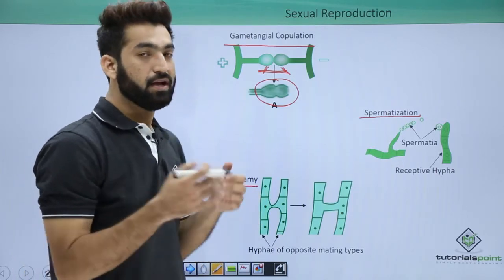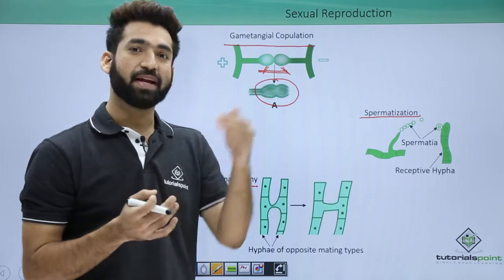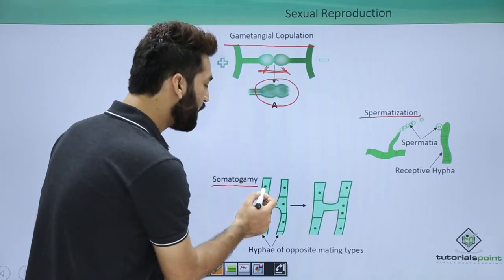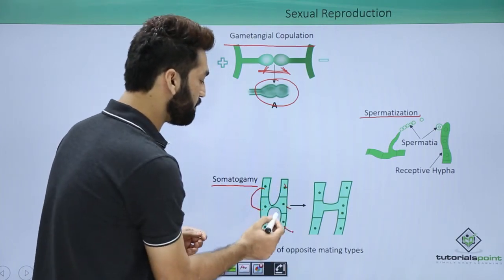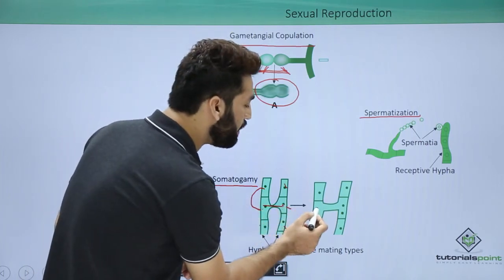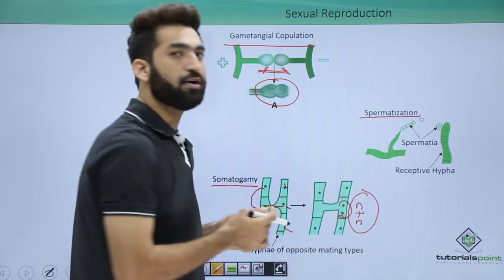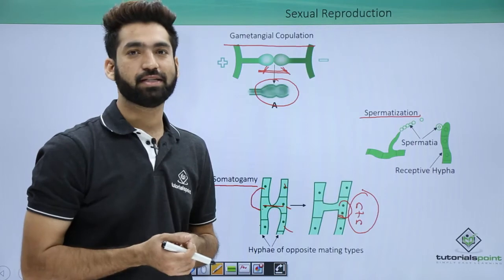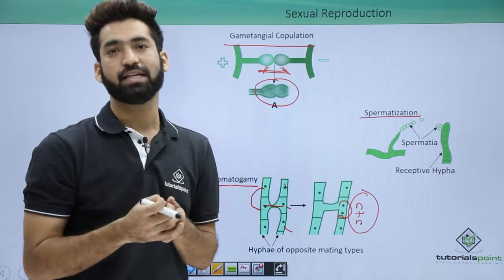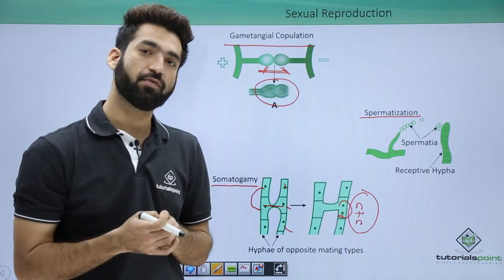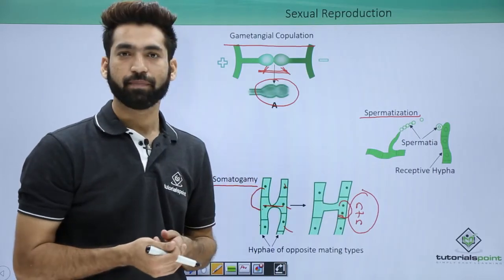The fifth method, very common in basidiomycetes, is somatogamy. Members of basidiomycetes don't have sex organs, yet sexual reproduction takes place because their somatic cells combine. A nucleus transfers from one somatic cell to another, making the cell n+n, which is called the dikaryon stage. The dikaryon stage is an important feature of ascomycetes and basidiomycetes. This is how somatogamy takes place — somatic cells fuse even without sex organs.